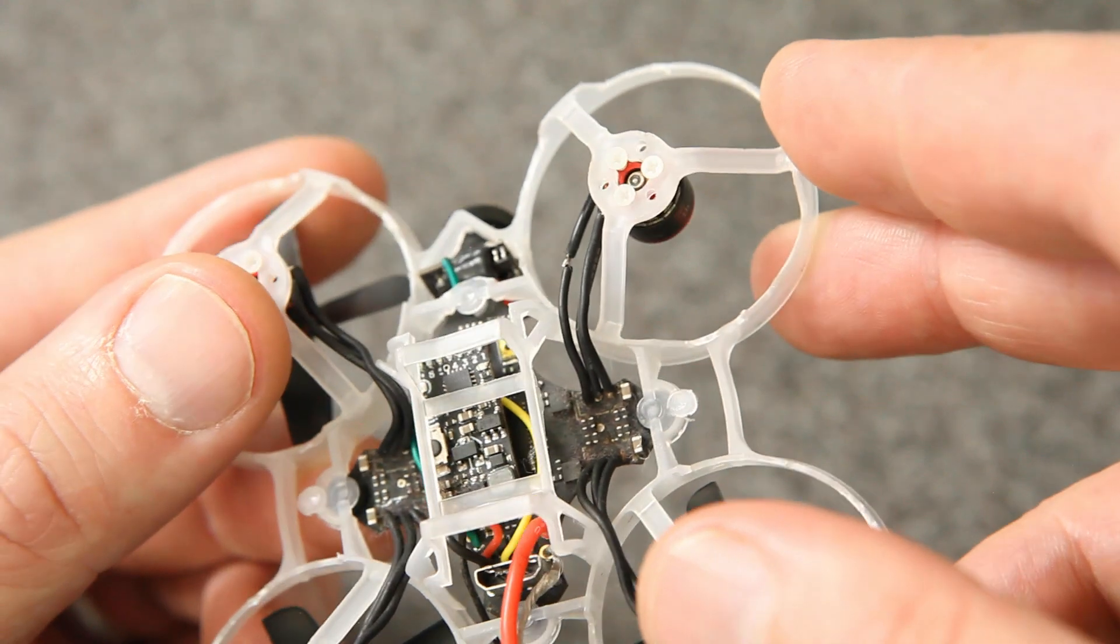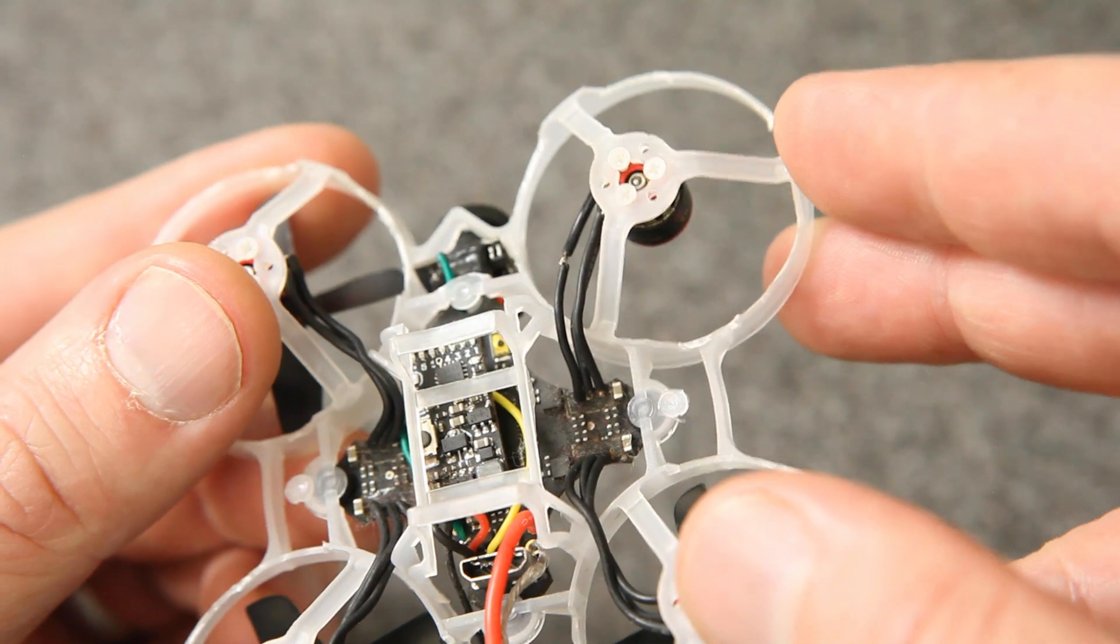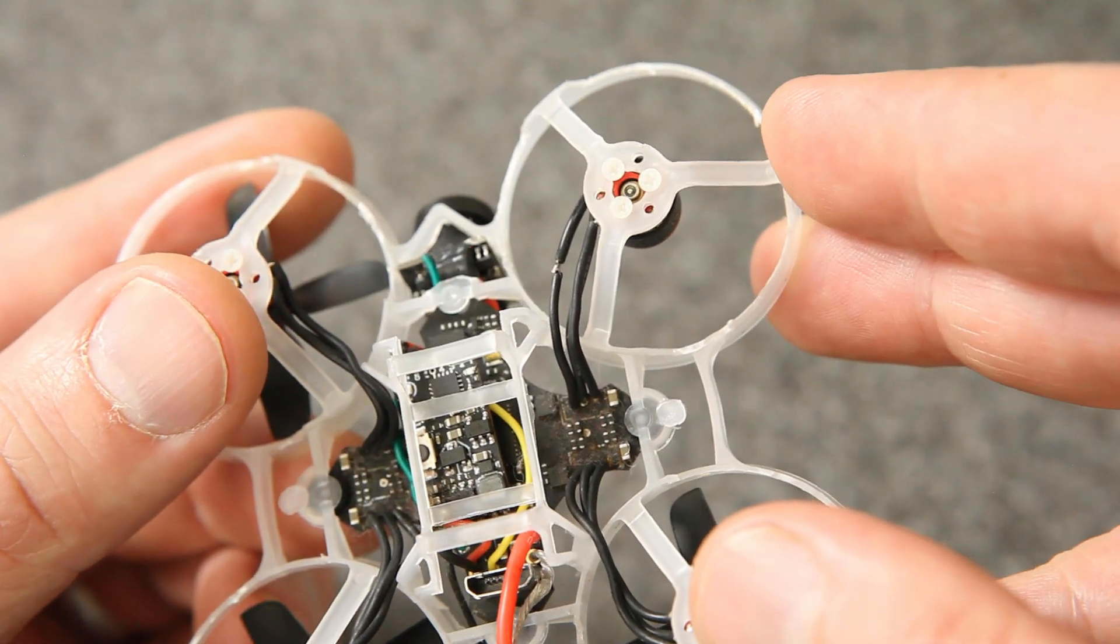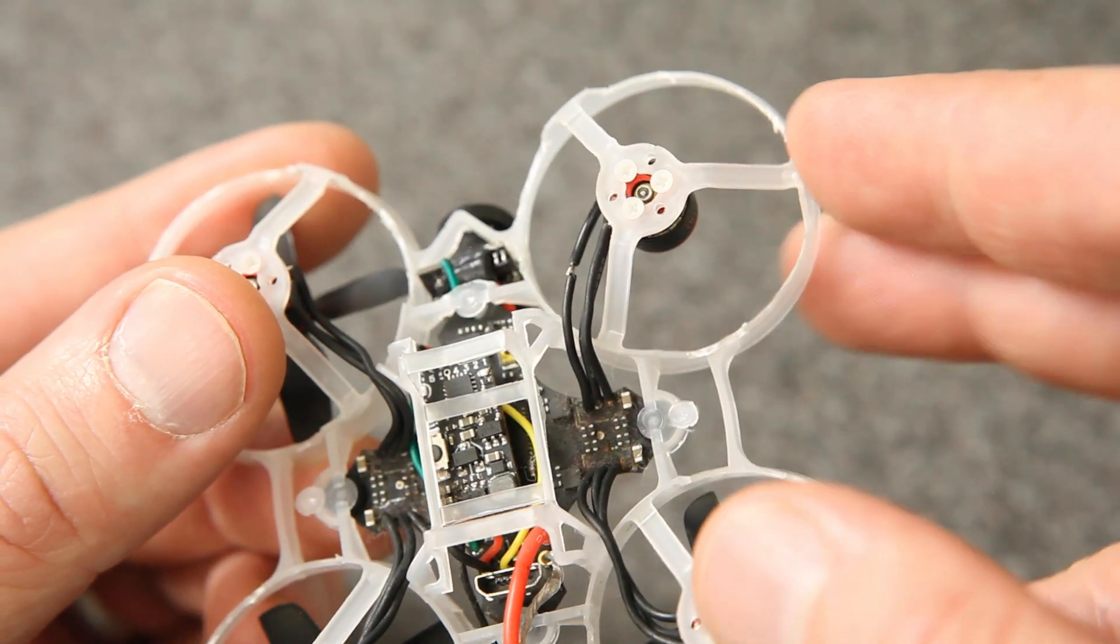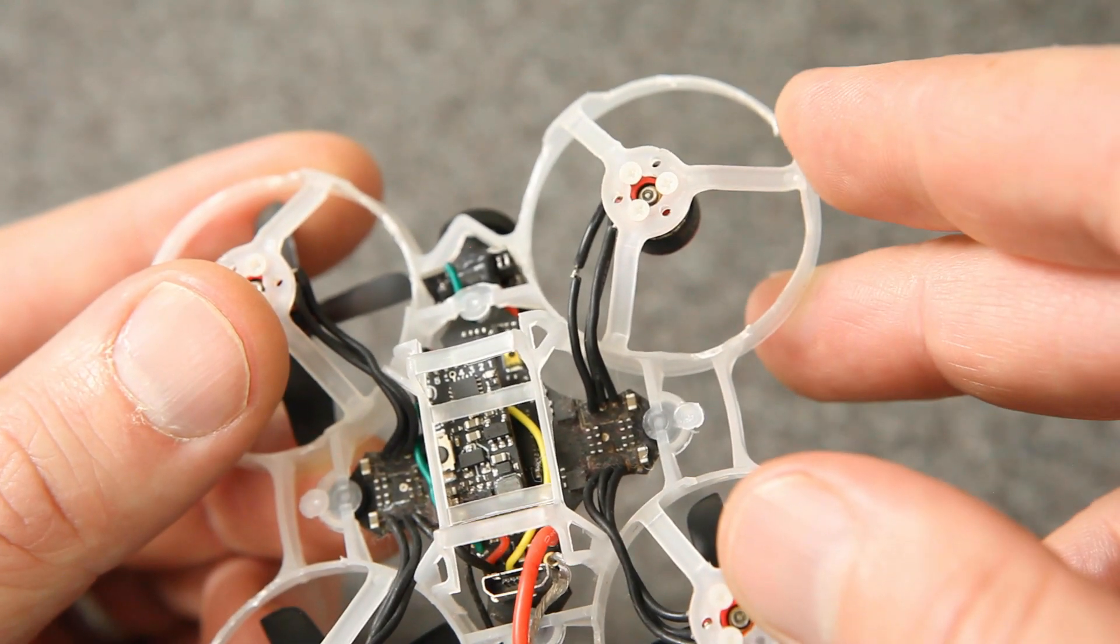You can get it from solidspot.com. Unfortunately, you can't buy just a few of them. You have to buy them in a bag of 100, so you might want to combine with some of your friends and split it, and then it's not so bad. The size you need for this is M1.4, and I'm using 4mm length.